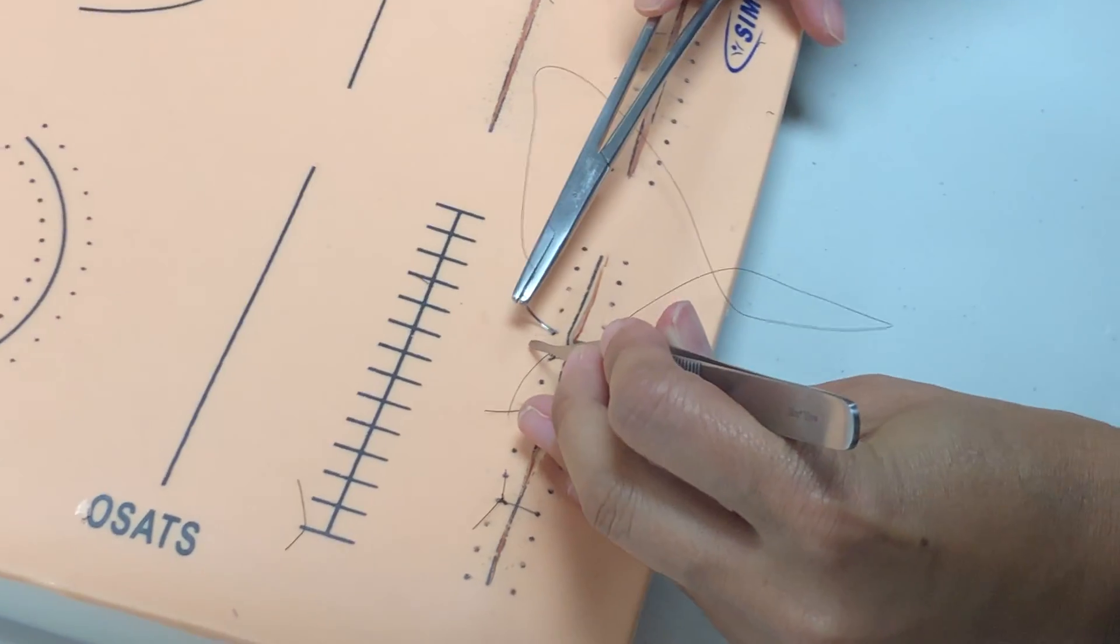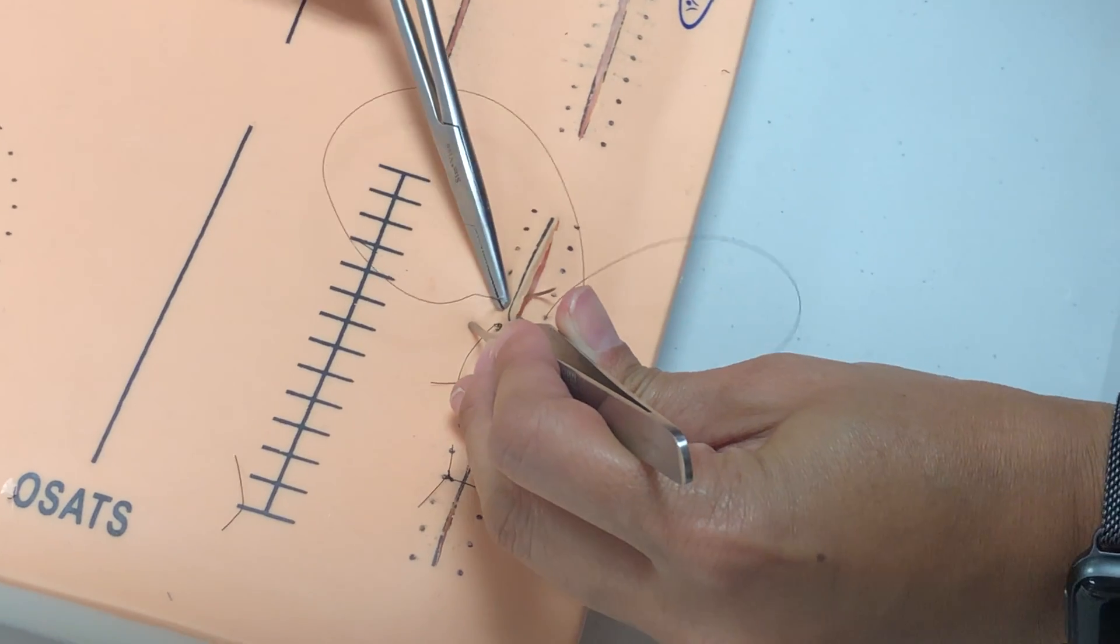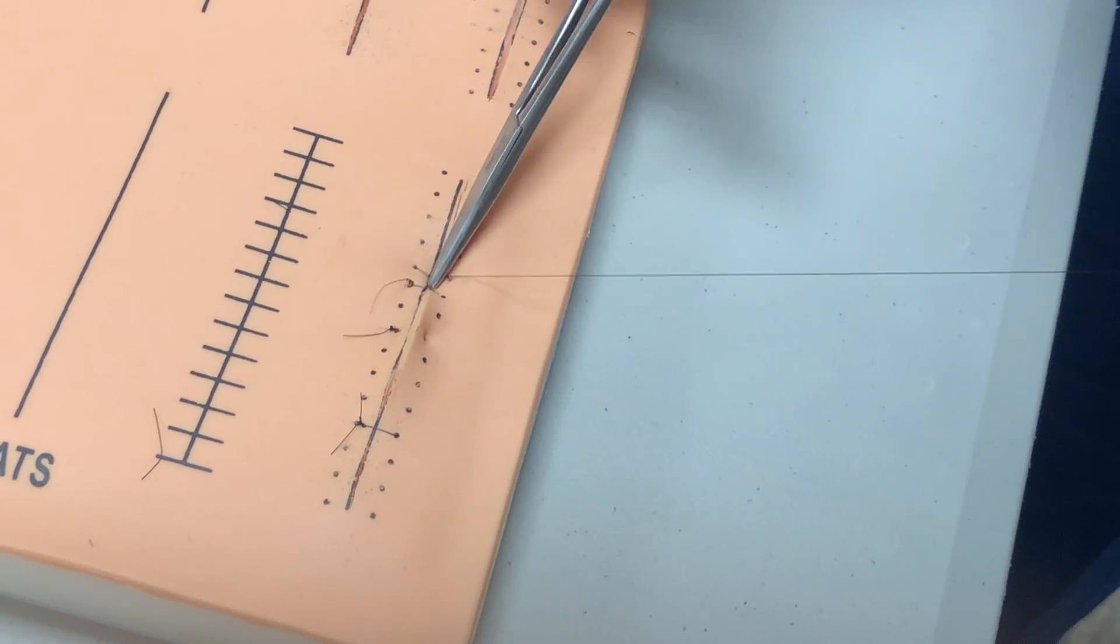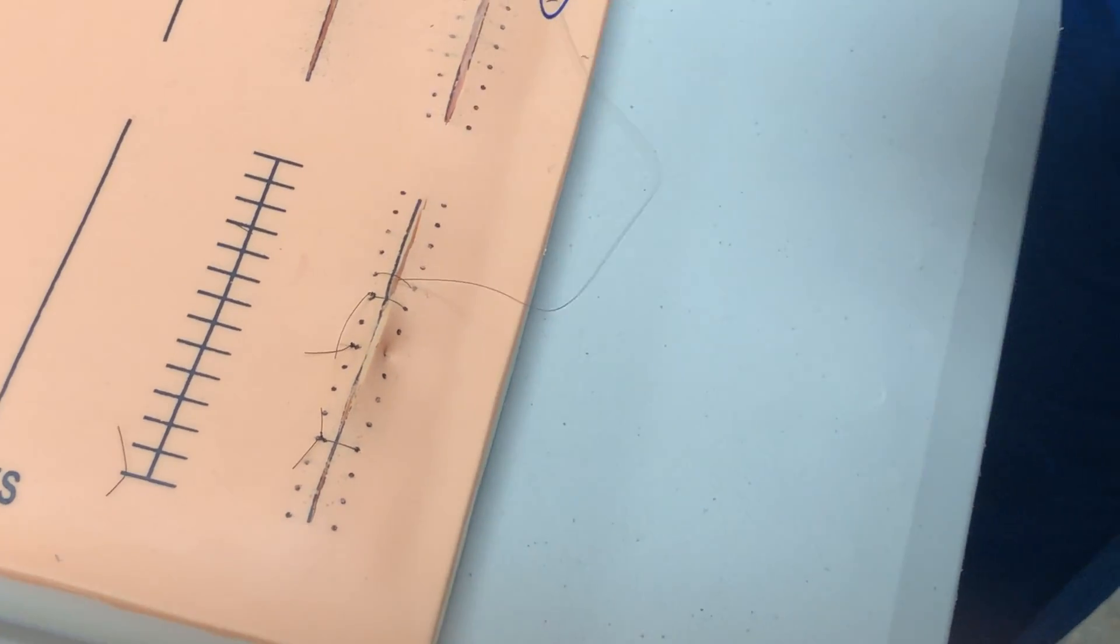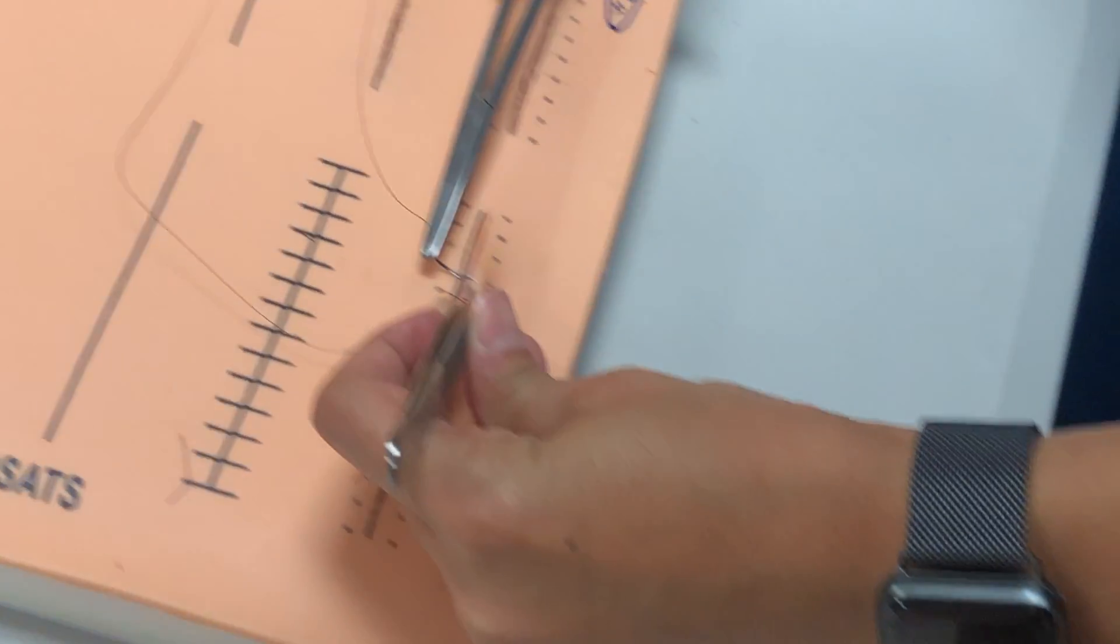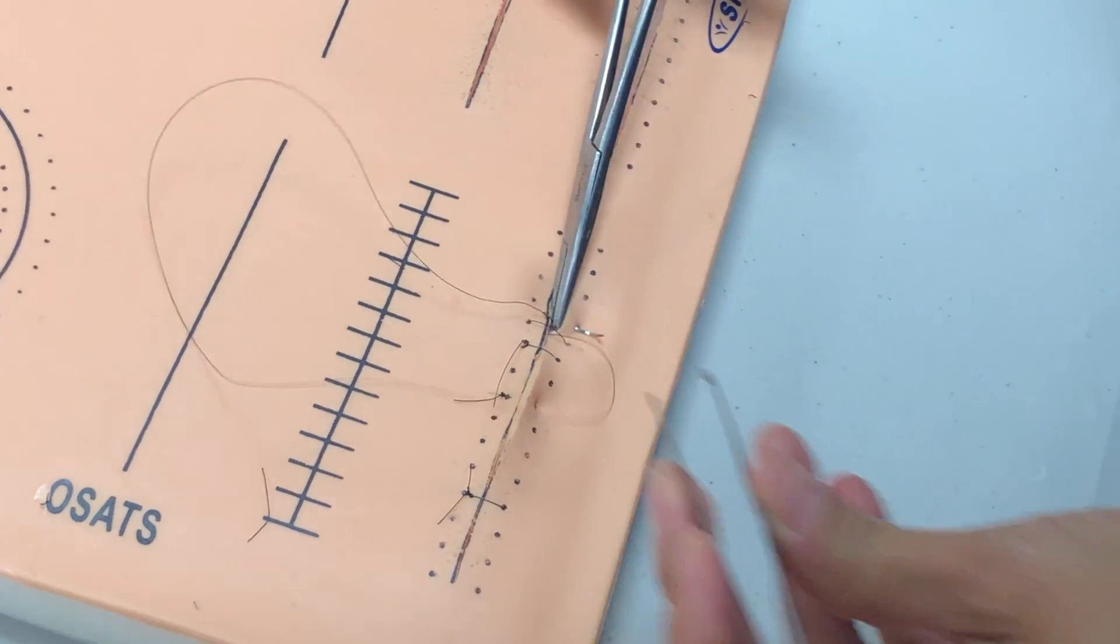So I'm going to grab right here, take a bite, and grab this, and just kind of lay it down like that, coming out diagonal.